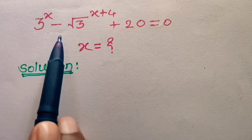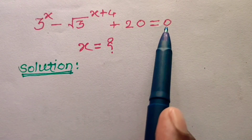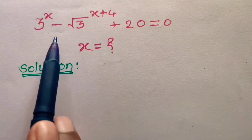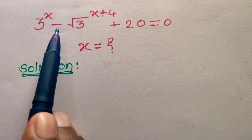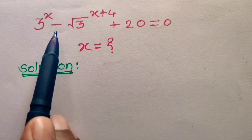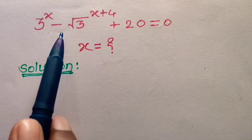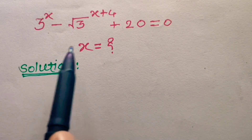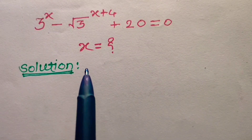If we directly apply log on both sides, then the right hand side log 0 is not defined. And on the left hand side, if we apply log, then due to the addition and subtraction it becomes complicated, because there is no standard formula to get the value of logarithm of a plus b. So we have to use a different idea here.